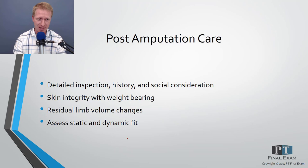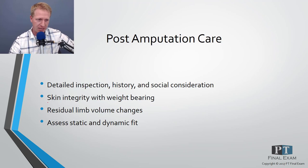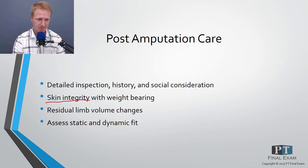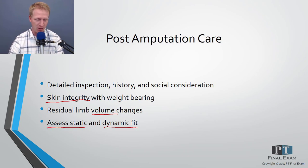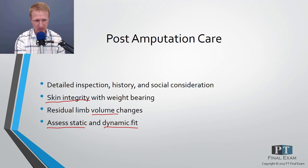Post-amputation care always starts with a detailed inspection, history, and social considerations — what the patient was like before, what you predict after, and what the patient wants. Always check skin integrity, as ulcers or breakdown on the residual limb can be catastrophic for gait training. Volume changes can be dramatic. Assess both static and dynamic fit — does the prosthesis fit well standing still, and does it piston or loosen during walking?